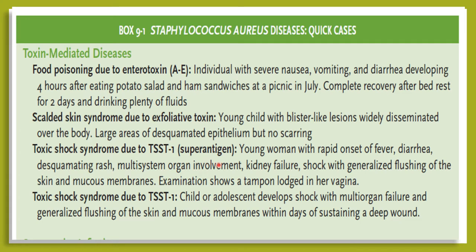Two cases regarding toxic shock syndrome due to TSST-1, a superantigen. Case one: a young woman with rapid onset of fever, diarrhea, disseminating rash, multi-system organ involvement, kidney failure, and shock with general flushing of skin and mucous membranes — examination reveals a tampon retained in her vagina. Case two: a child or adolescent develops shock with multi-organ failure and generalized flushing of the skin and mucous membranes within days of sustaining a deep wound.